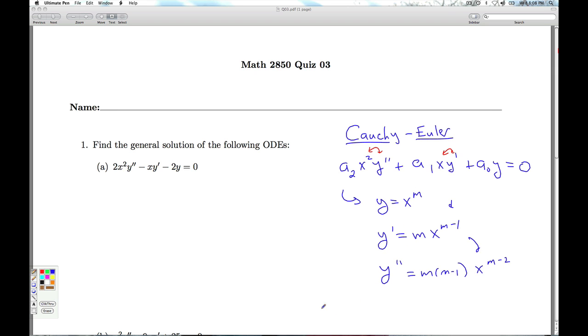And we're just going to be left with the auxiliary equation, a2m times m minus one plus a1m plus a0 equals zero. So that's what the auxiliary equation looks like for the Cauchy-Eulers.